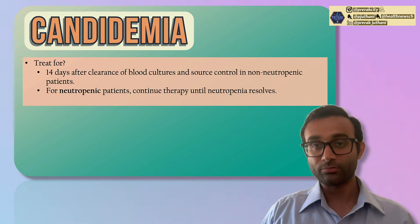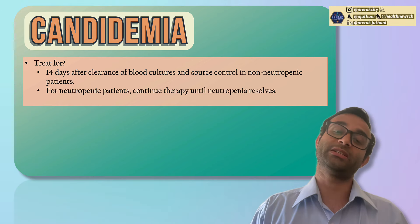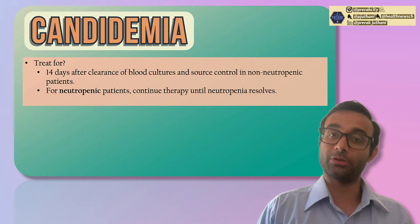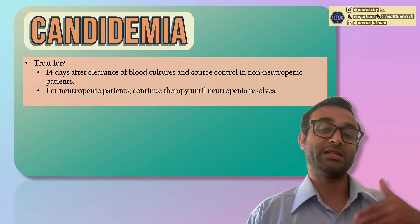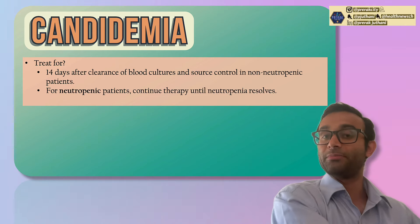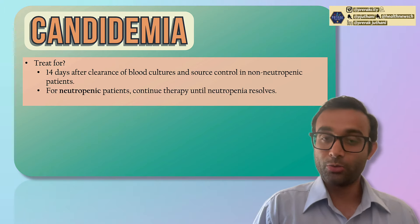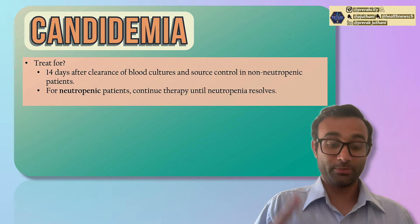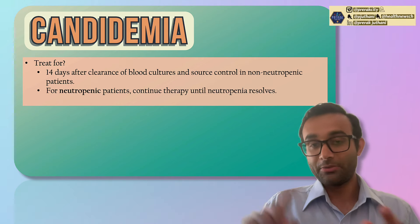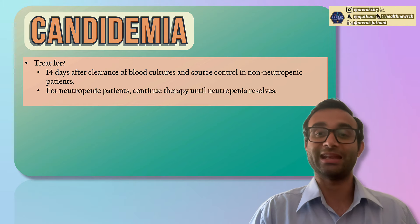If someone is neutropenic — neutropenia means an absolute neutrophil count less than 500 — you want to continue treatment until the neutropenia resolves, because neutropenia itself is a risk factor for candidemia. We went over the presentation of candidemia, how to holistically treat someone with septic shock-like physiology, and the diagnosis, clinical presentation, and treatment of candidemia.